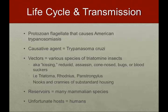Life cycle and transmission: it's a protozoan flagellate that causes American trypanosomiasis. The causative agent is Trypanosoma cruzi. There are various vectors, and they are species from the triatomine insects, otherwise known as the kissing bugs, the reduviid bug, the assassin or cone-nosed bugs, or bloodsuckers. They live in the nooks and crannies of substandard housing. The reservoirs are many mammalian species — zoonotic transmission. We happen to be the unfortunate host for these causative agents.